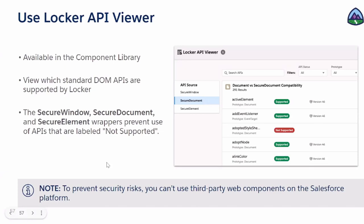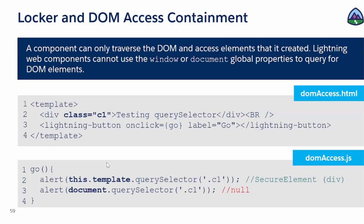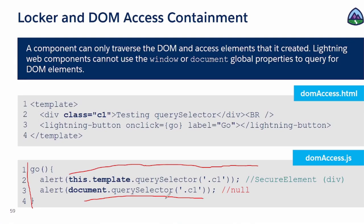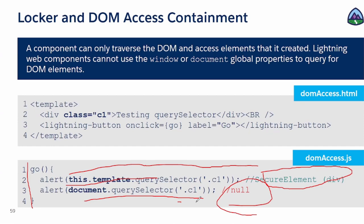Now let's look at some real-time code that shows where Locker Service can or cannot work. Let's say this is the code you're writing: this.template.querySelector and then document.querySelector. querySelector is a method of JavaScript. When you say this.template.querySelector, it is okay. But if you say document.querySelector — same thing — it's going to return you null. Why? Because this.template.querySelector returns a secure element, but document.querySelector does not return a secure element, and then we are not allowed to access or change those elements. That shows how it works with or without Locker Service.